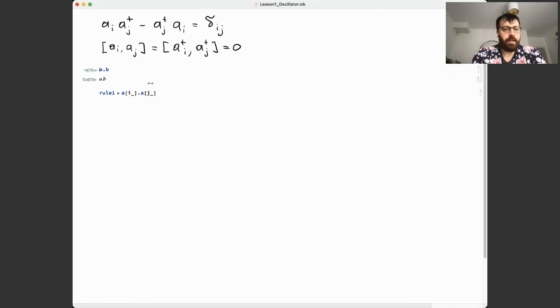I'm going to define it rule by rule. I'm going to use this dot for non-commutative product. So a dot b doesn't do anything, but if you do dot between two vectors it computes the dot product. For non-lists, it doesn't do much. It is useful to look into full form to see how it looks internally for Mathematica.